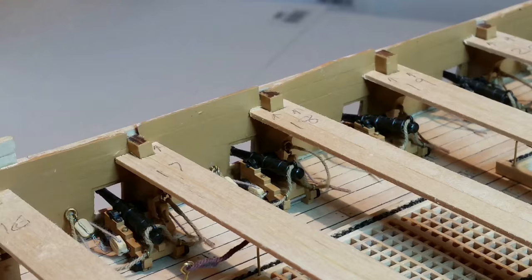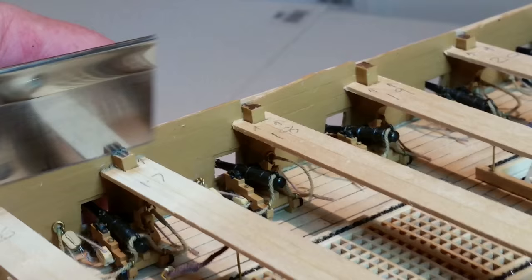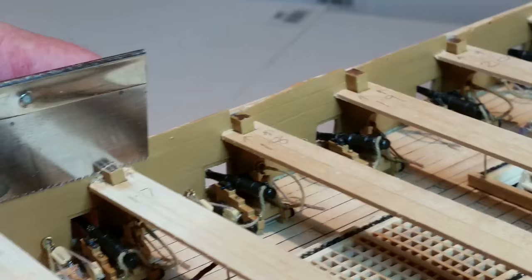Cut the tops of frames 17 to 21 close to the bulwark, then remove by cutting close to the support beam. Do not trim the outer planking. You will plank over the top of the frames later.